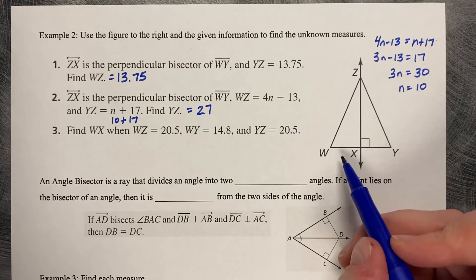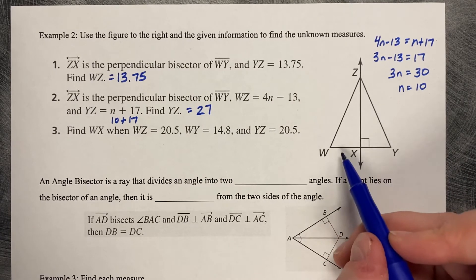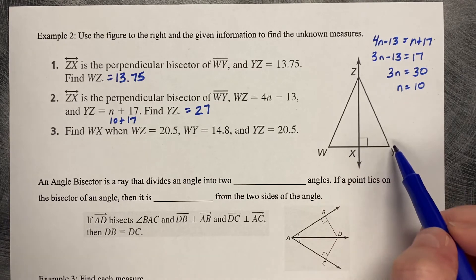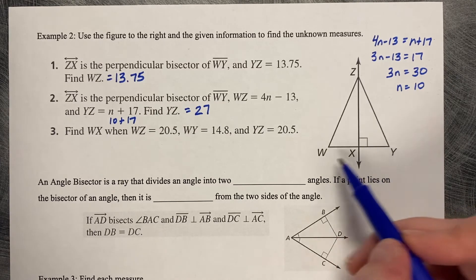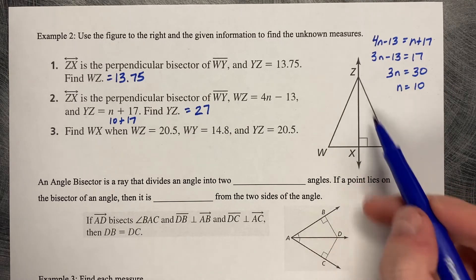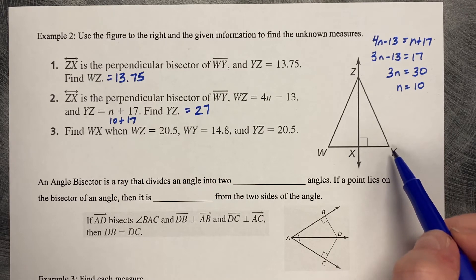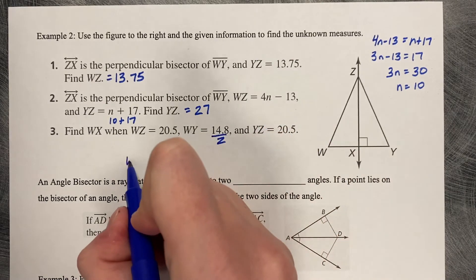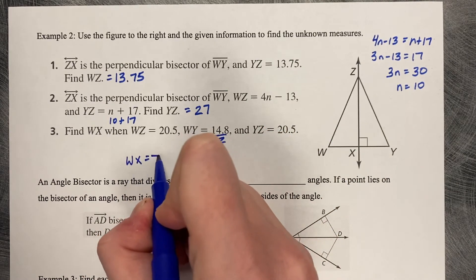Find WX. When WZ is 20.5, WY is 14.8. And YZ is 20.5. So that means that we can take WY and split it in half. So then WX is 7.4.